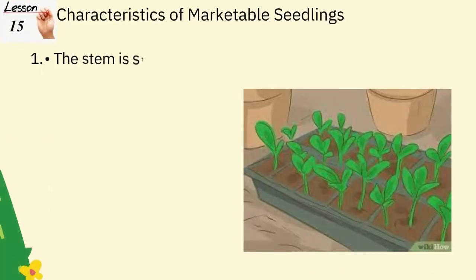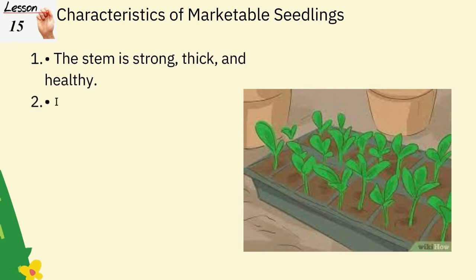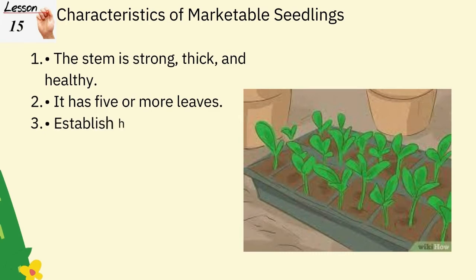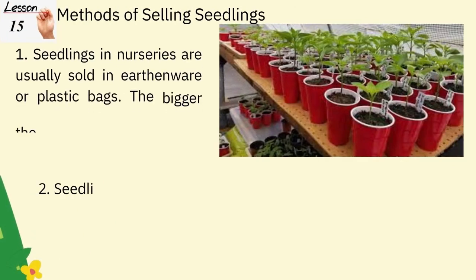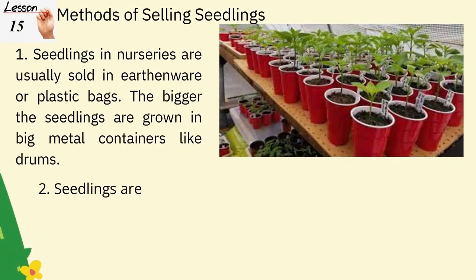Characteristics of marketable seedlings: (1) the stem is strong, thick, and healthy; (2) it has five or more leaves; (3) it has established healthy roots. Now, how are we going to sell seedlings? Let's find out the methods of selling seedlings.